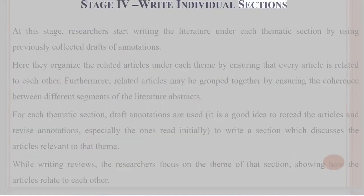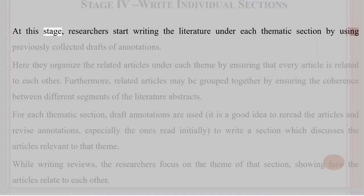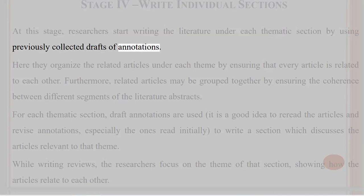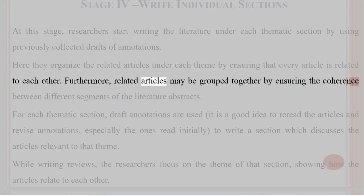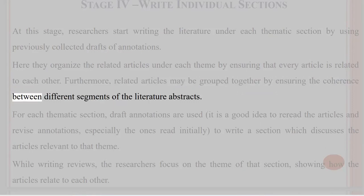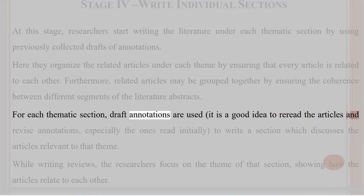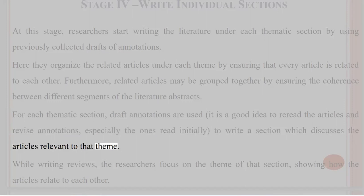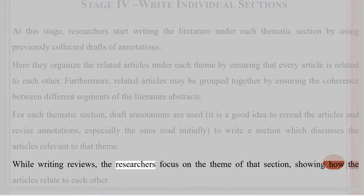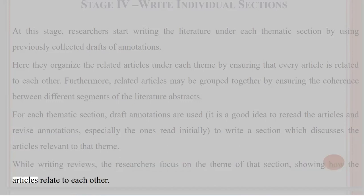Stage 4: Write Individual Sections. At this stage, researchers start writing the literature under each thematic section by using previously collected drafts of annotations. They organize the related articles under each theme, ensuring that every article is related to each other. Related articles may be grouped together by ensuring coherence between different segments of the literature abstracts. For each thematic section, draft annotations are used, and it is a good idea to re-read the articles and revise annotations to write a section which discusses the articles relevant to that theme, focusing on how the articles relate to each other.